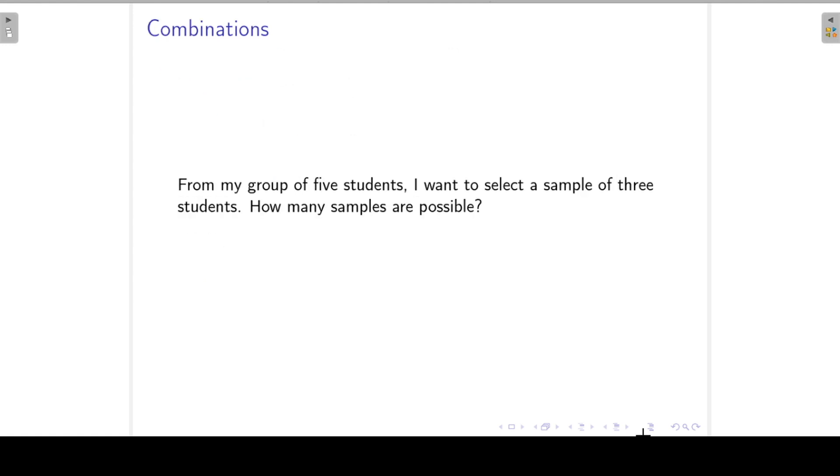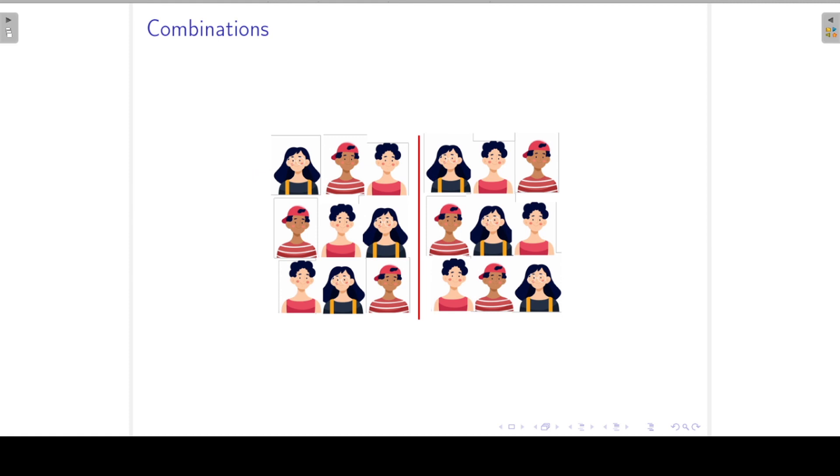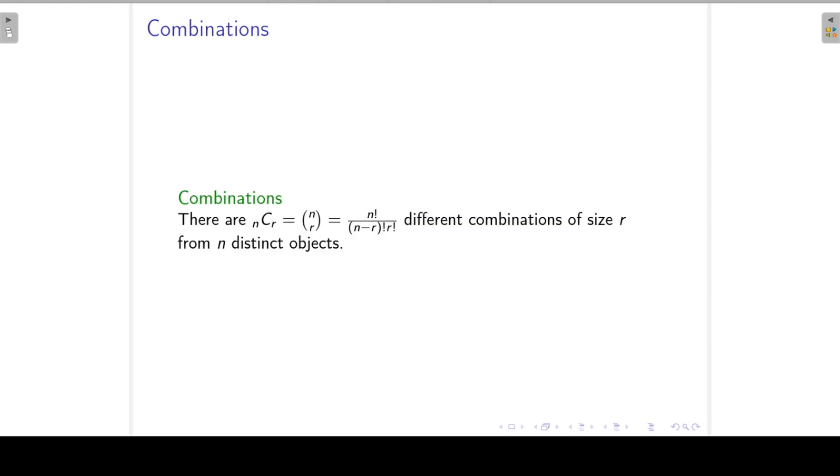Now next we can say that from my group of five students, I want to select a sample of three students. How many of these samples are possible? So here we have two samples of three different students, and of course there are many samples of size three possible from my group of five students. If you look at this first sample here, let's call it S1, let's call these three students Ann, Adam and Adele. On this slide, I have the same three students, and I've selected them in different orders. But because it's the same three students, we will consider this as a single sample.